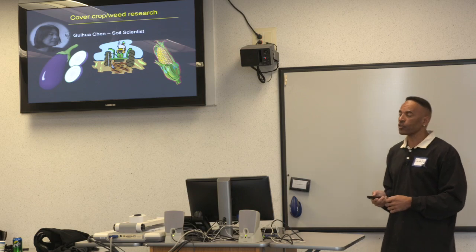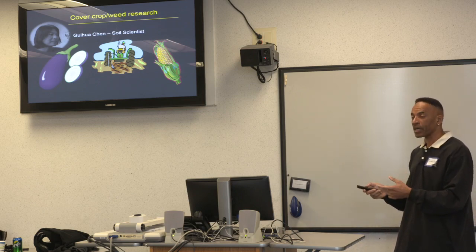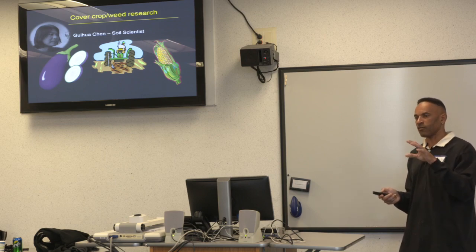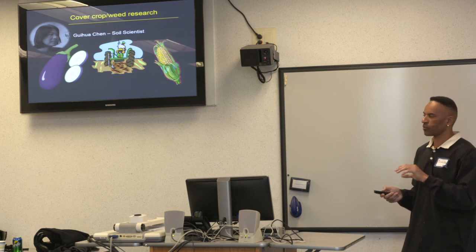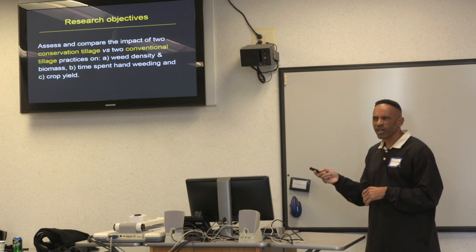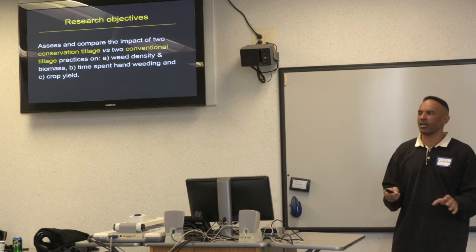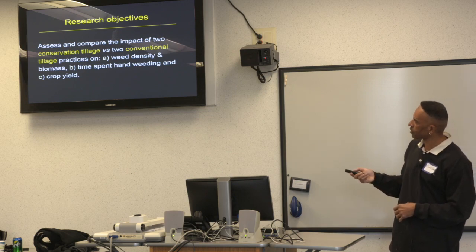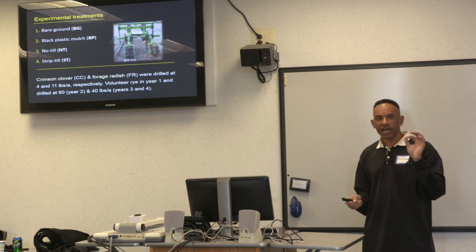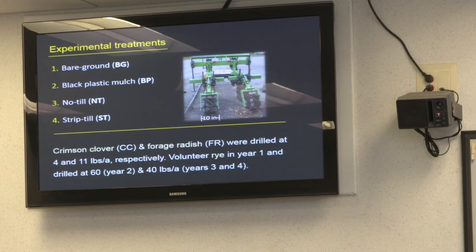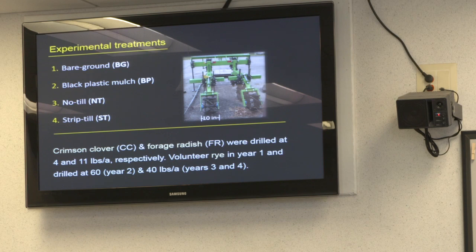This was a four-year project on land going through organic transition, with a rotation of eggplant, sweet corn, eggplant, and sweet corn. It was a multidisciplinary project looking at everything from insects to greenhouse gas emissions, but I'll focus on the weed data. The study had four treatments: two conventional till practices — bare ground (cultivated with no cover) and black plastic — and two conservation tillage practices — no-till and strip-till. All treatments started with a cover crop mixture of crimson clover, forage radish, and rye.